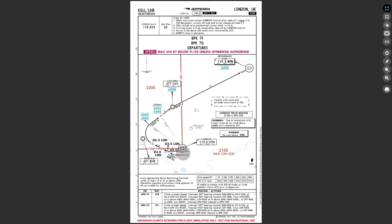Reading through the instructions: when instructed, contact London Control after takeoff — report callsign, SID designator, current altitude, and initial cleared altitude. SIDs include noise preferential routes. Cruising level will be issued after takeoff by London Control. Do not climb above SID levels until instructed by ATC. Expect close-in obstacles. Then here we have the standard instrument departure designator.